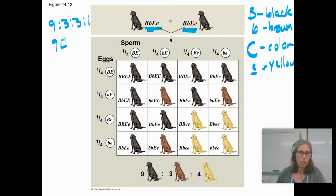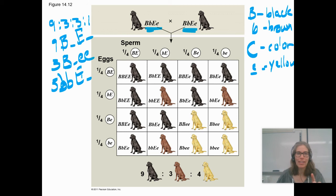Nine who are dominant for both traits. Three who are dominant for one trait, but not the other. Three who are dominant for like the second one, but not the first one. And one who is recessive for everything. So you should have four different phenotypes and they should be in the ratio of 9 to 3 to 3 to 1.